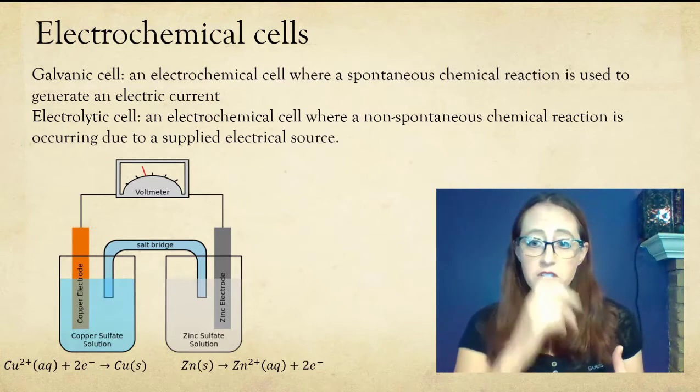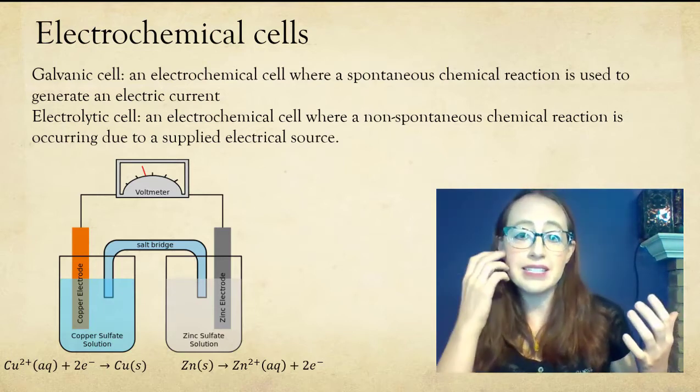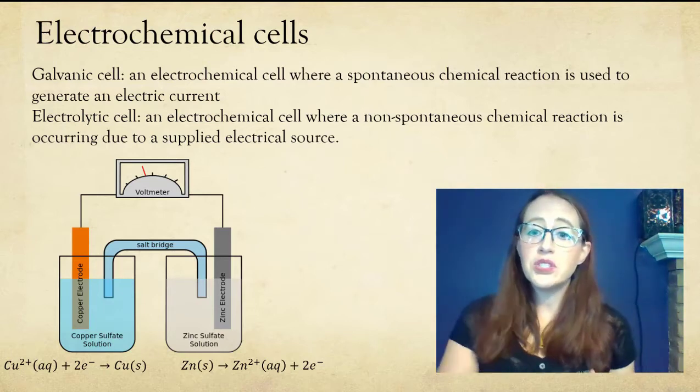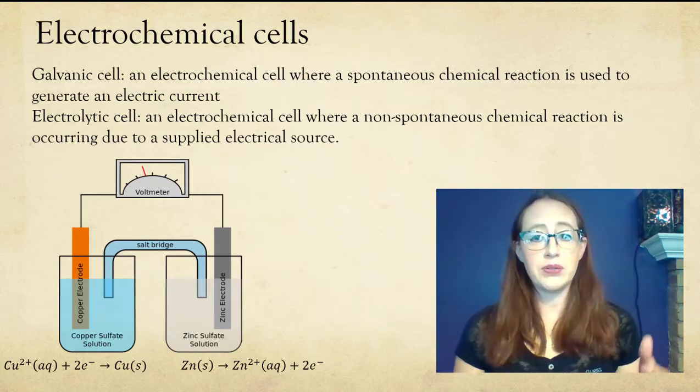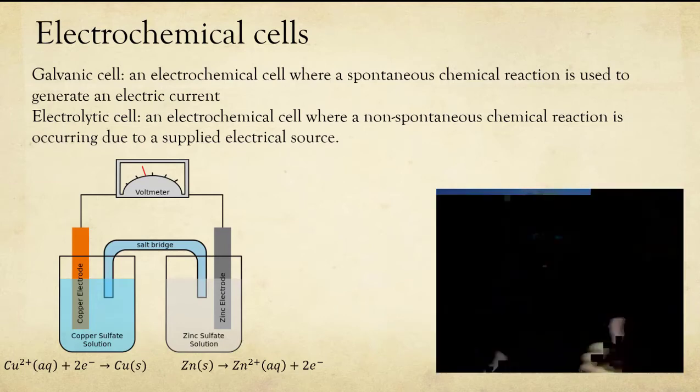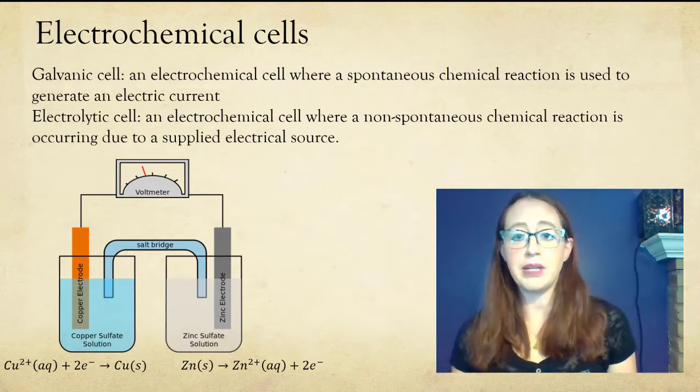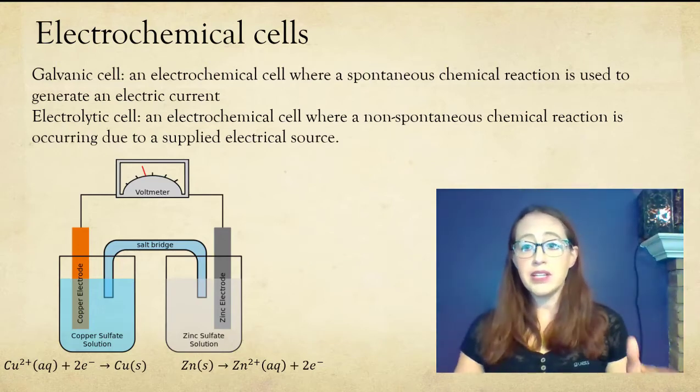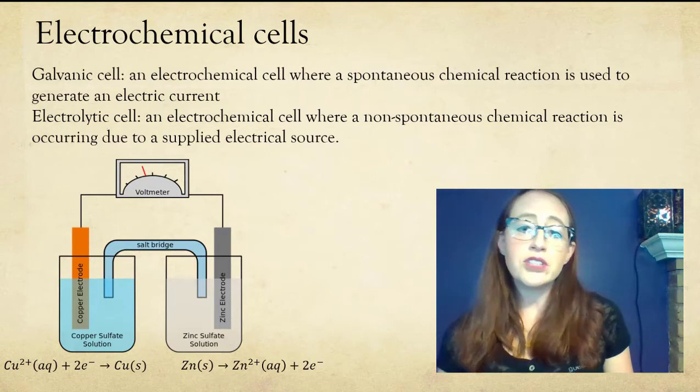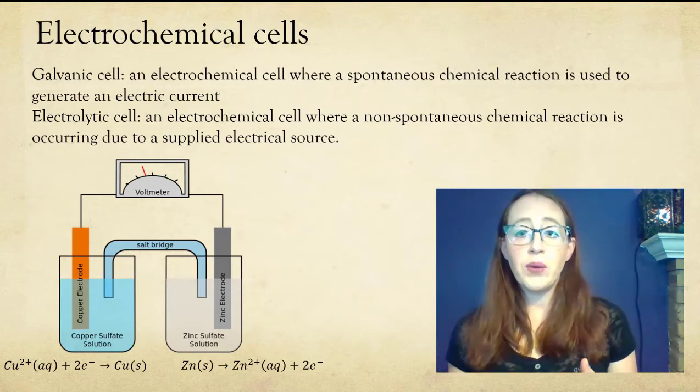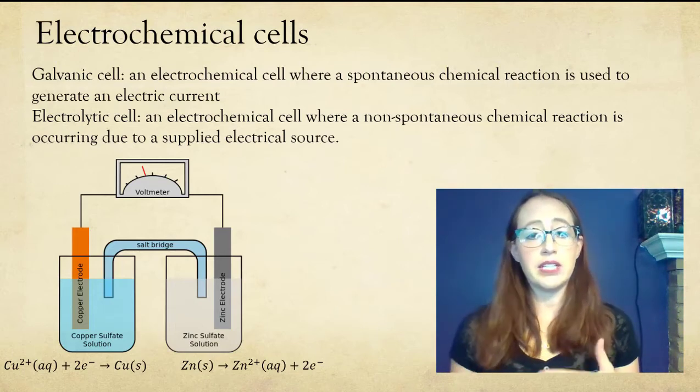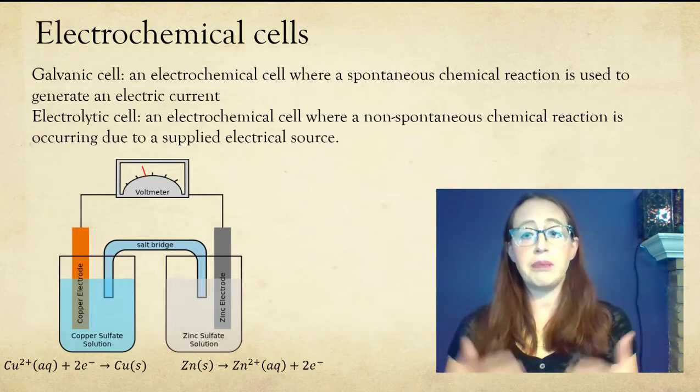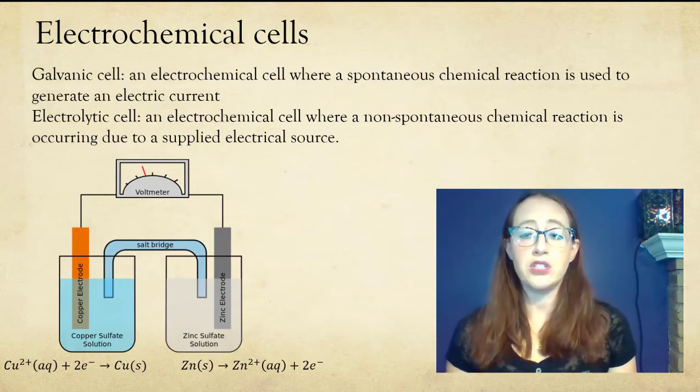This schematic here shows us the basic idea of what makes a cell. Often the two reactions are separated into different areas. A metal electrode is suspended in a solution of one ionic species, and then another metal electrode is often suspended in a solution of the other ionic species. Electrons then run along a wire where either the voltage of the reaction can be measured, or in the case of an electrolytic cell where you are going to be supplying energy to drive the reaction and drive the electrons.